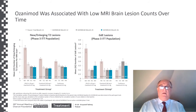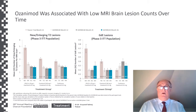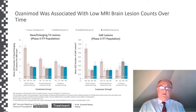Here we have data on MRI brain lesion counts in Daybreak. On the left side, we have data on new and enlarging T2 lesions, and you can see that the count of these lesions across parent trial treatment groups was similar and low. On the right side, the data for gadolinium-enhancing lesions showed a very similar pattern, with counts also low in all investigated groups, at the level of 0.2 per year.